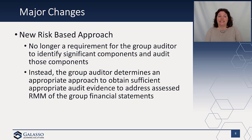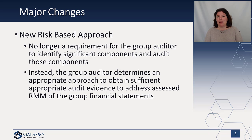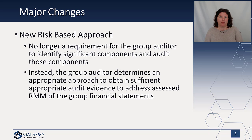Probably the biggest change in this standard is a more risk-based approach. In the extant standard, they give you size and whether it's a major component, then determine if you have to do an audit versus what your alternatives are. Instead of identifying significant components and having to audit those separately, they now say: do a risk assessment, identify the risks, and be responsive to that risk in the group financial statements. You look at a more holistic approach to getting sufficient appropriate evidence and perform the response for the group financial statement. It's a shift from prescriptive requirements to a principles-based approach for handling aggregation risk.